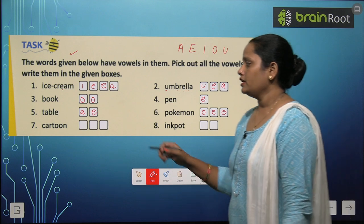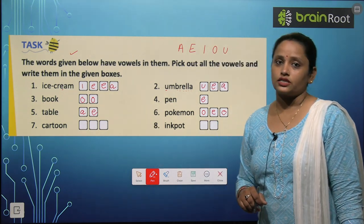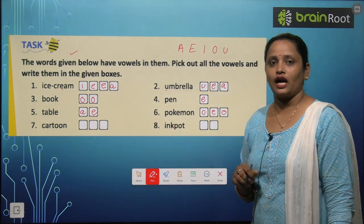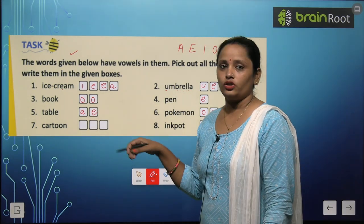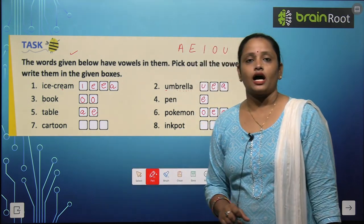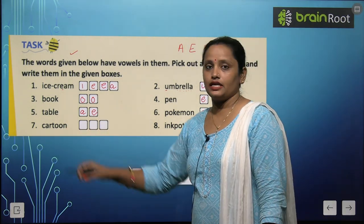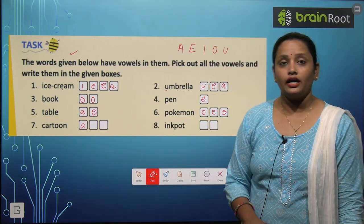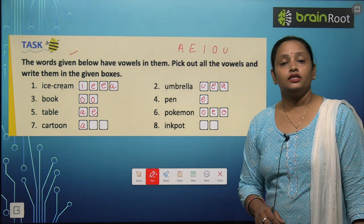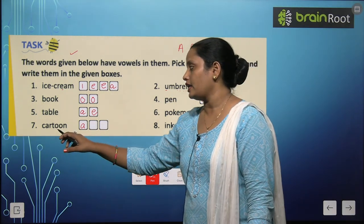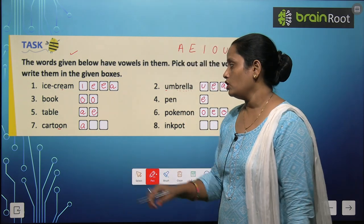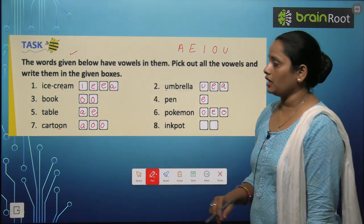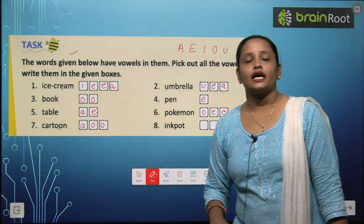Next let's do the seventh one which is cartoon. Everybody likes to see cartoons, right? So let's find out the vowels in this. C is a consonant and A is a vowel — let's write it. Next, R and T — these two are consonants. Next, double O — O is a vowel, so we write both. And the last letter is N — a consonant.